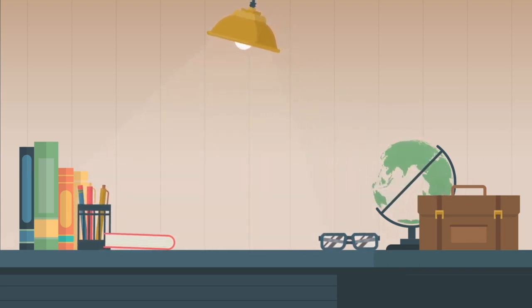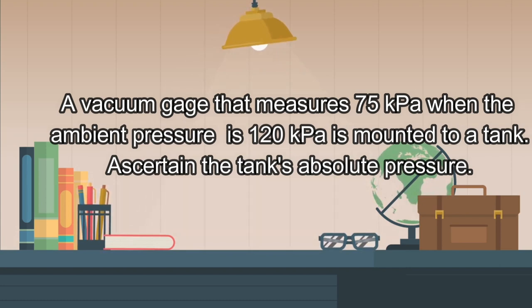My sample problem is: a vacuum gauge that measures 75 kPa when the ambient pressure is 120 kPa is mounted to a tank. Ascertain the tank's absolute pressure.